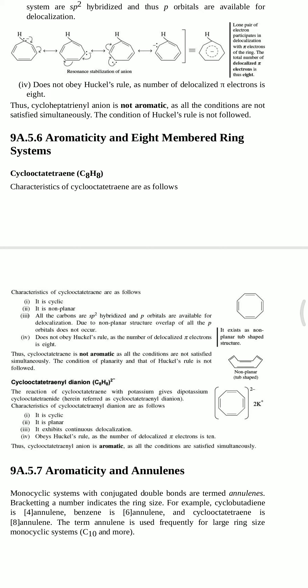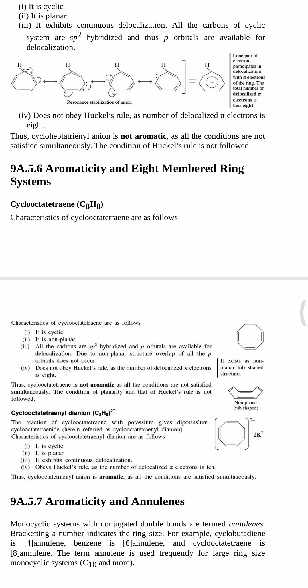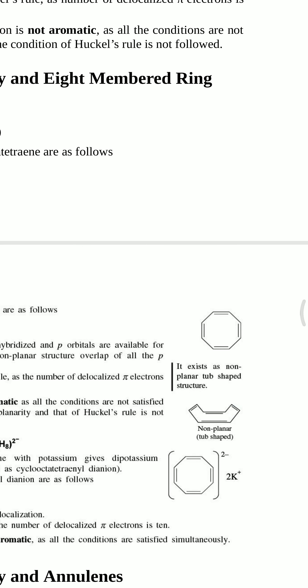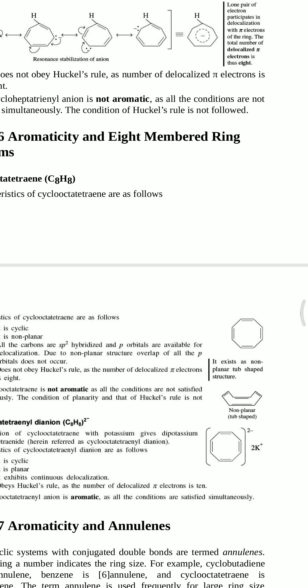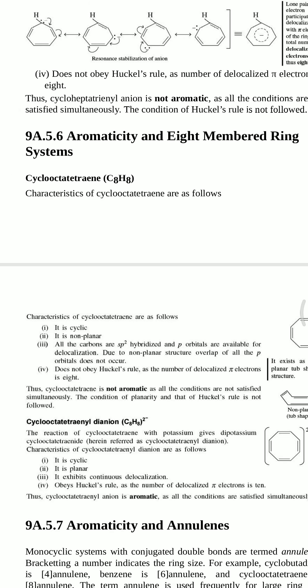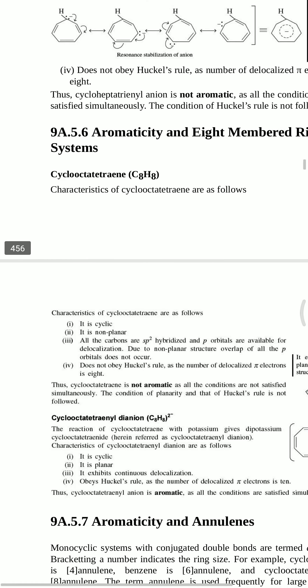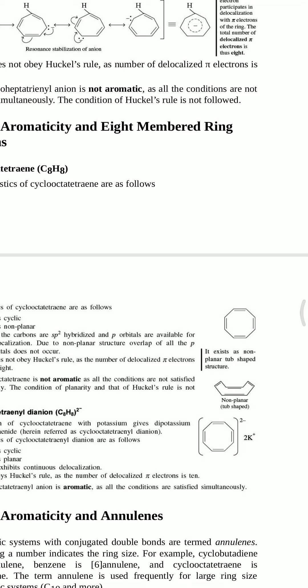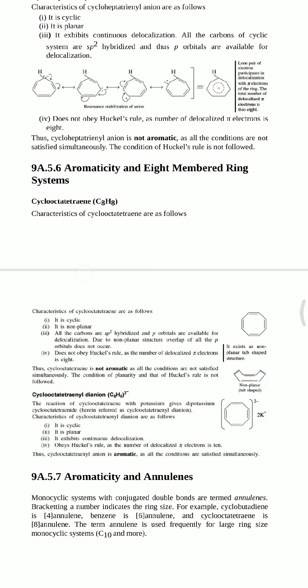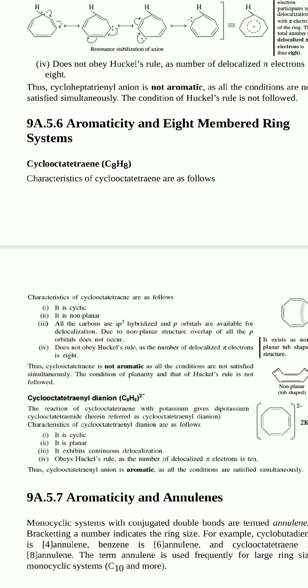For the eight-membered ring system: cyclooctatetraene (C8H8) exists in a non-planar, tub-shaped structure. It is cyclic (yes), but it is non-planar, so it does not follow the second statement. It also does not follow Hückel's rule because it has 4 double bonds giving 8 pi electrons, and 8 is not in the Hückel series (2, 6, 10...). Therefore, cyclooctatetraene is not aromatic, as all conditions are not satisfied.